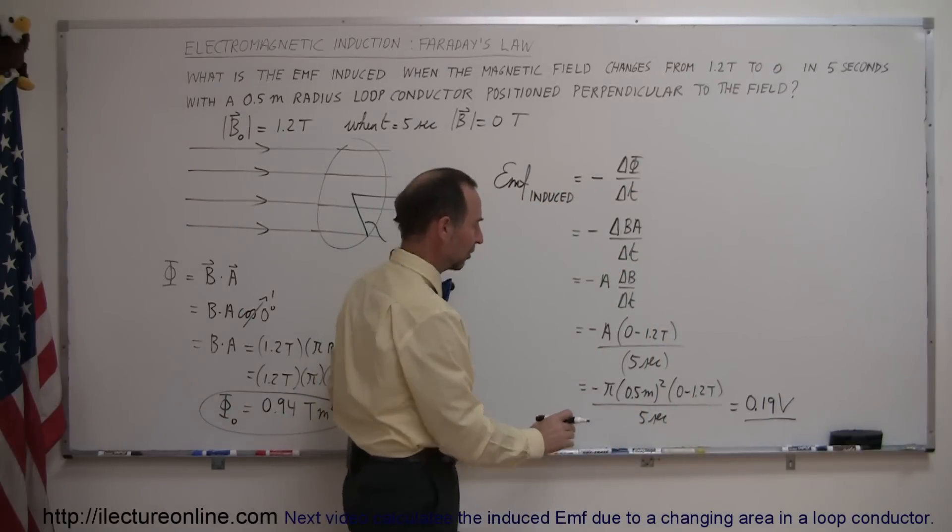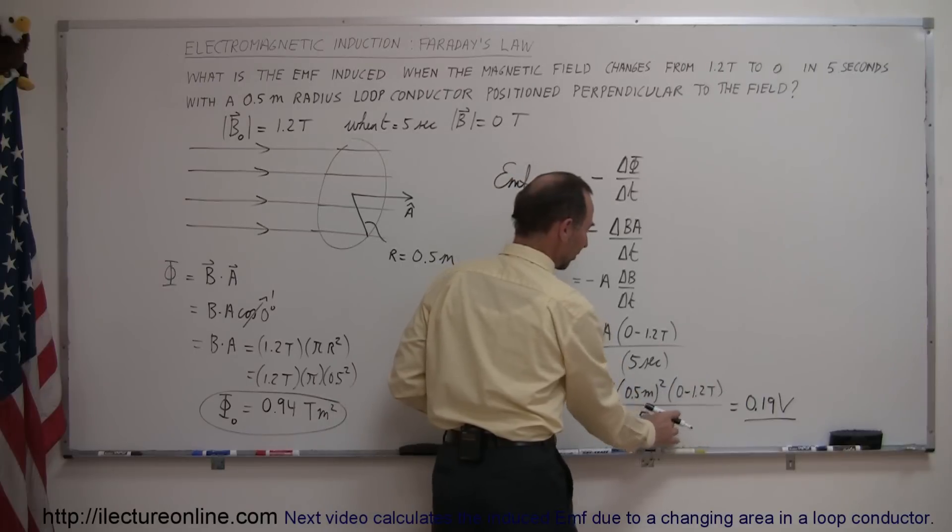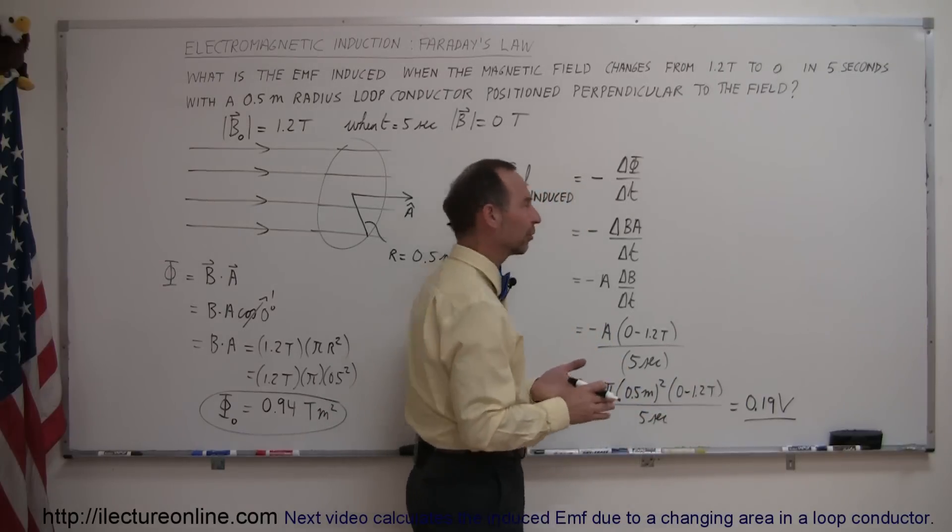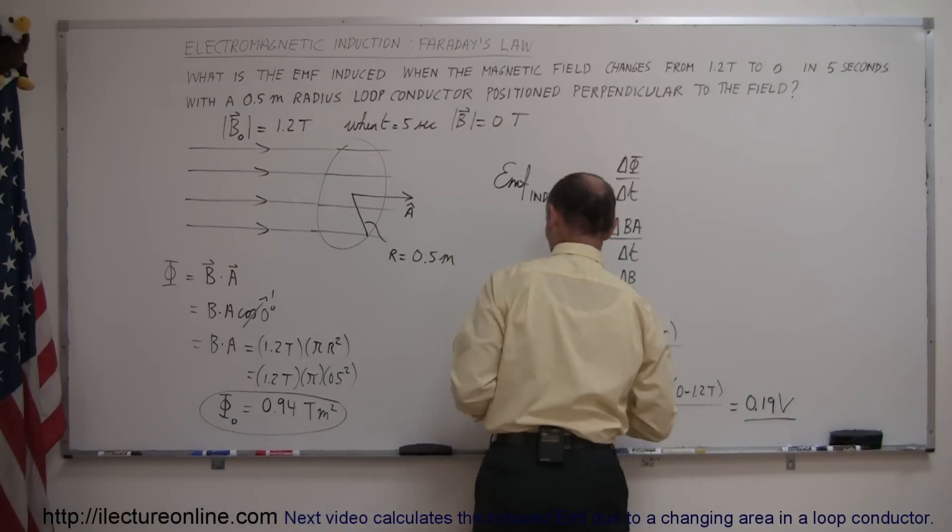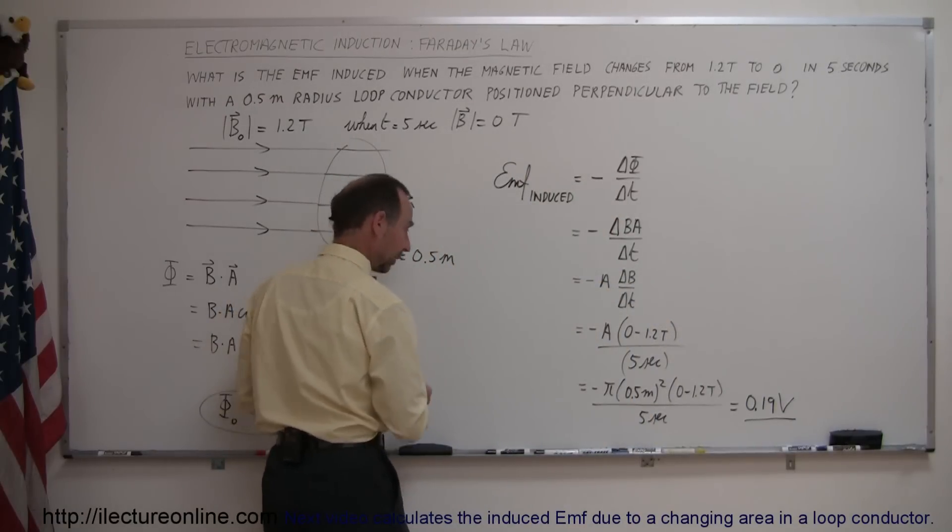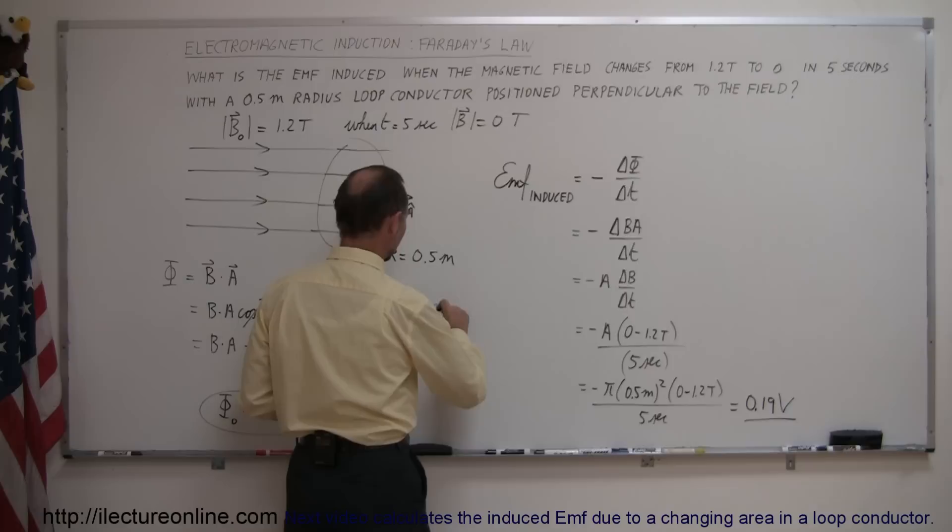For those who are interested in how we end up with volts here, and notice that the units here are meters squared times teslas divided by seconds, how does that turn into volts? Well, let's find out. So the question here becomes, and let me use a different color so we can differentiate it,